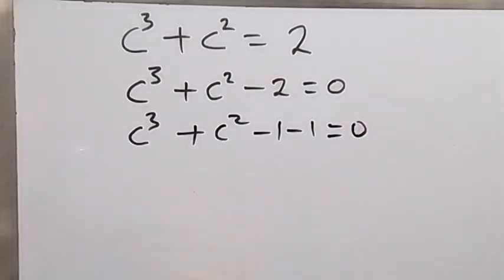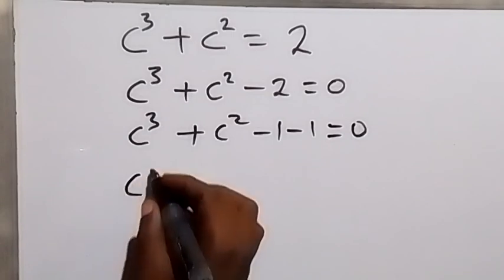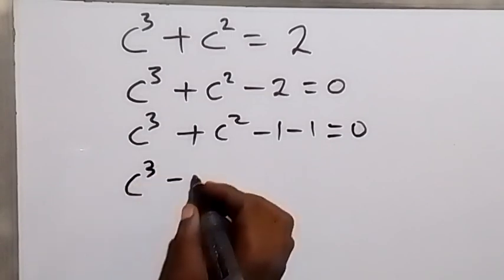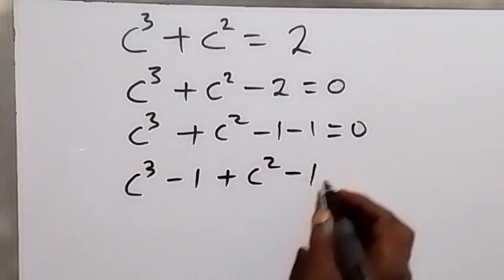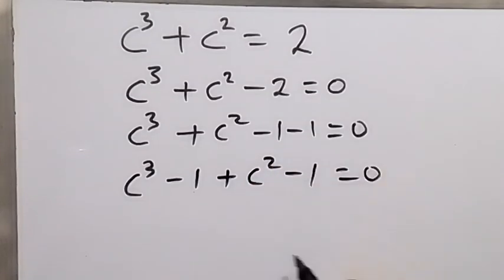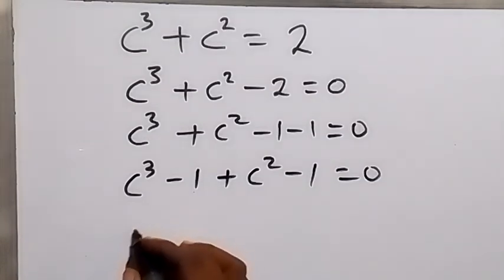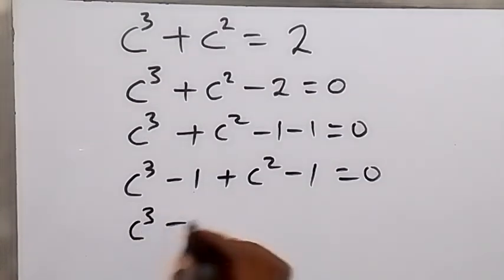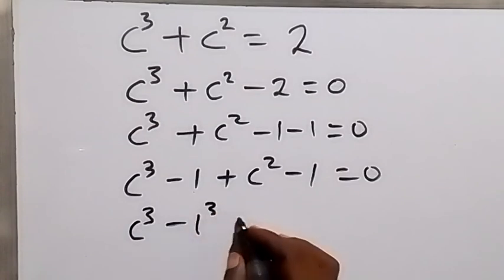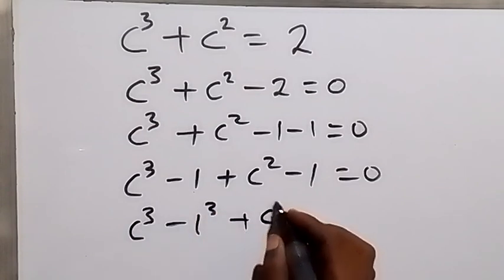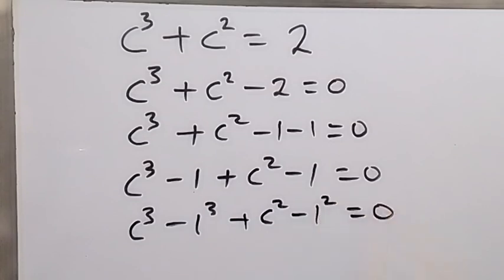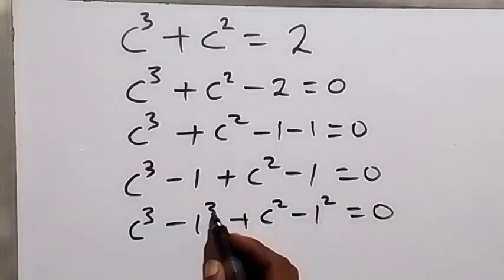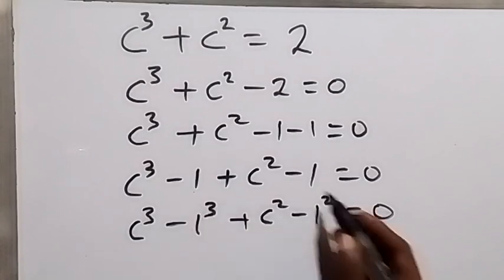Let's write this again as c raised to power 3 minus 1, then plus c squared minus 1, equals 0. We can also write this as c raised to power 3 minus 1 cubed, plus c squared minus 1 squared, equals 0, because 1 cubed is still 1, and 1 squared is still 1.